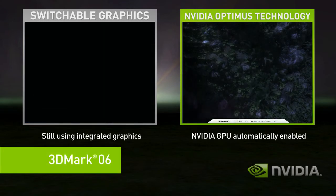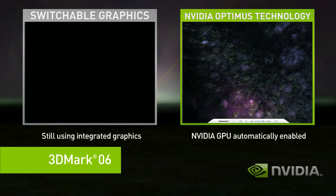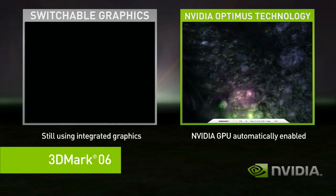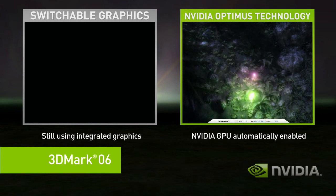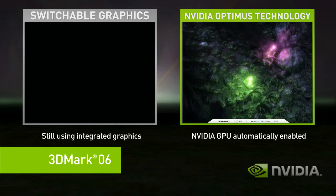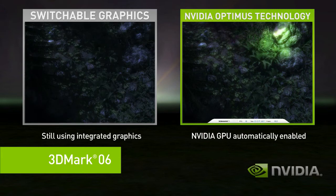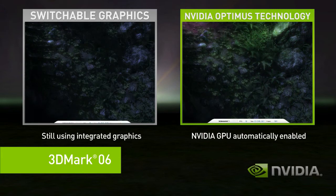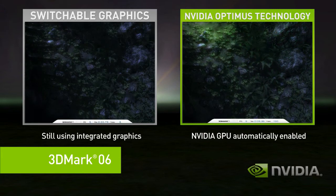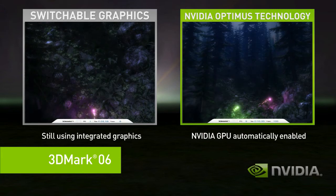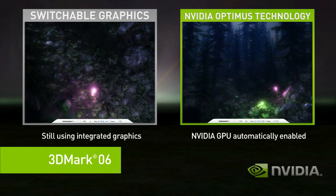Optimus, on the right-hand side, when it starts a complex application, it automatically uses the discrete GPU. The performance difference between the two is easy to see.